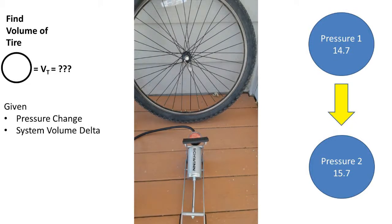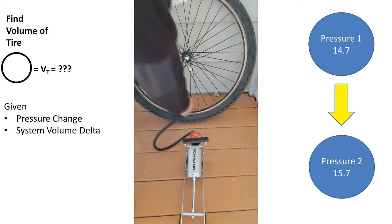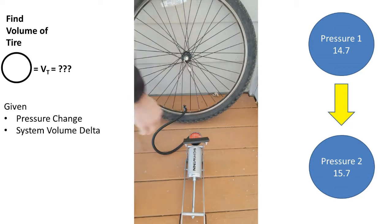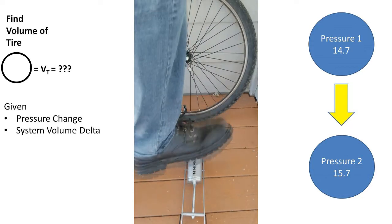In this problem, we have a bicycle pump pumping up a tire. It is stroked once and the pressure reading goes from 14.7 PSI absolute to 15.7 PSI absolute.